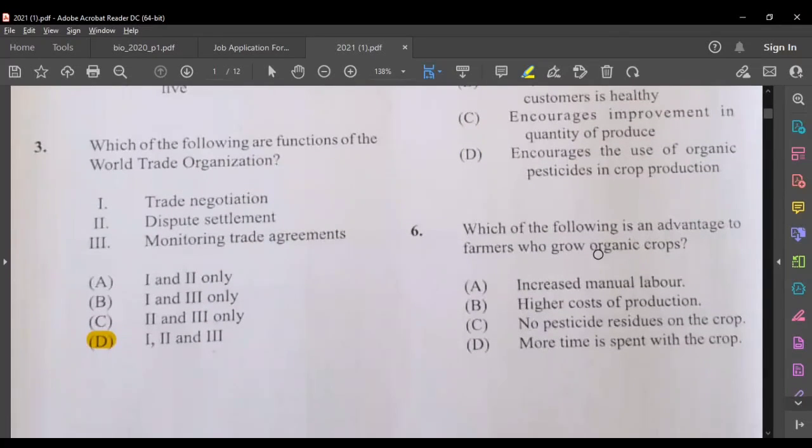Question six, which of the following is an advantage to farmers who grow organic crops? Increased manual labor, higher cost of production, no pesticide residue, more time is spent with the crop. The best or the most suitable answer for this would be C, no pesticide residue, because in organic farming no pesticide, no inorganic pesticide is used on the crops.